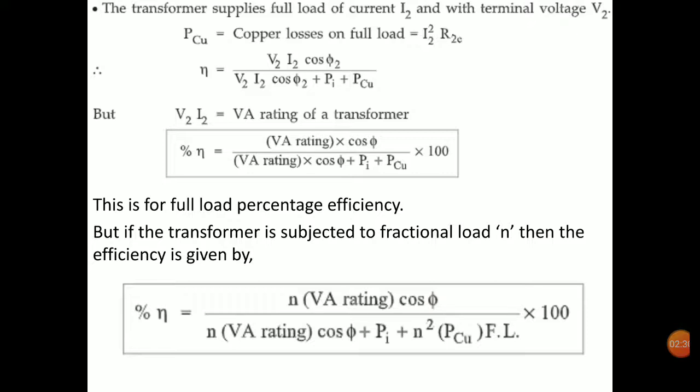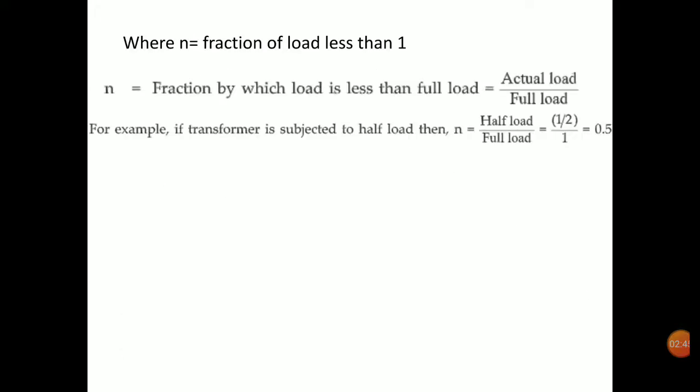The iron loss is a constant loss — it remains constant irrespective of the load — whereas the copper loss varies as the load varies. That is why we get the term n² times Pcu full load. Here n is the fraction of load, defined as actual load divided by full load. For half load, n equals 0.5, and for three-fourth load, n equals 0.75.